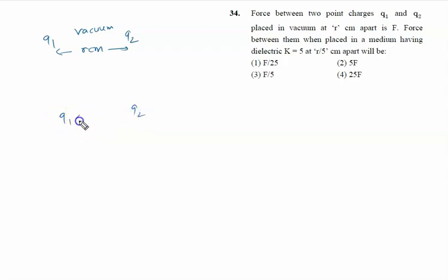q1, q2, distance is r by 5 centimeter and dielectric constant is 5. So in the first situation, force will be F equal to given by one upon four pi epsilon not q1 q2 upon r square, equation number one.